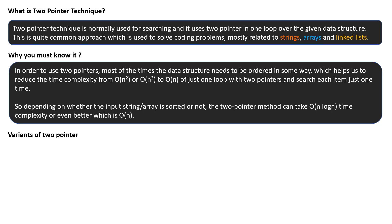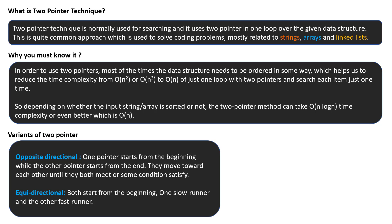Variants of two pointer: based on my knowledge, we currently have only two variants of the two pointer technique. One is opposite directional and the second is equidirectional. In opposite directional, one pointer starts from the beginning while the other pointer starts from the end, and they move towards each other until they both meet or some condition is satisfied.